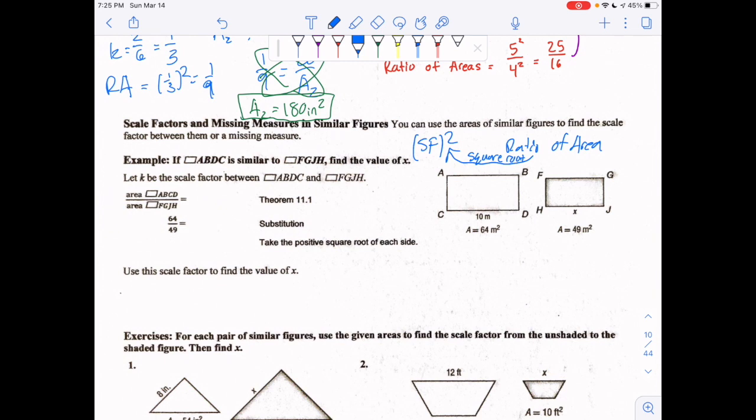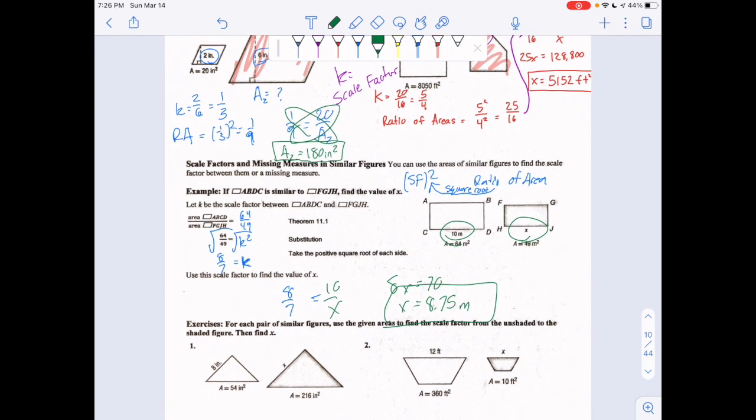Let's take a look here. Find the areas real quick: 64 over 49. See if you can simplify first, but if you notice it's a perfect square already—64 is a perfect square, 49 is a perfect square—take the square root of that ratio. You're gonna get 8 over 7 as your scale factor. Once you have that scale factor of 8 over 7, set up your proportion: 10 over x. Cross multiply and x equals 8.75 meters.